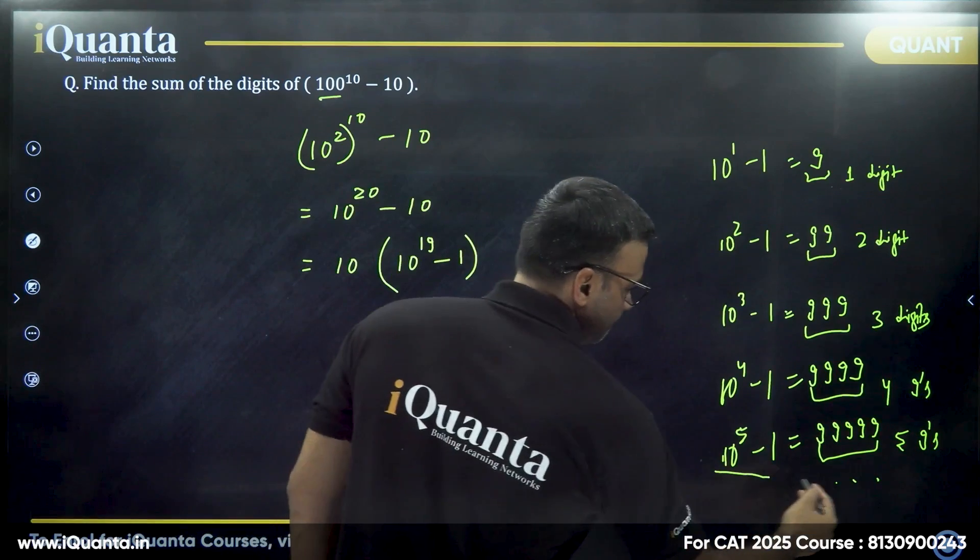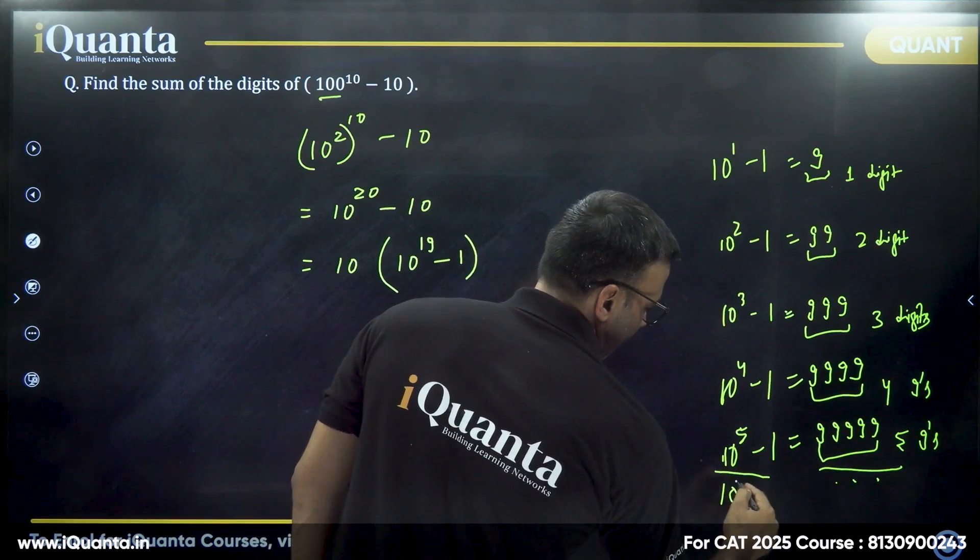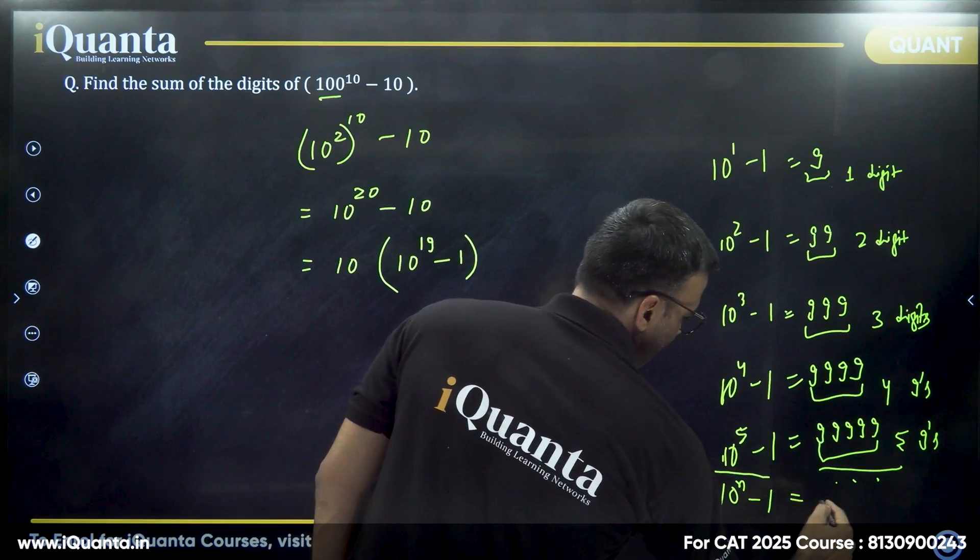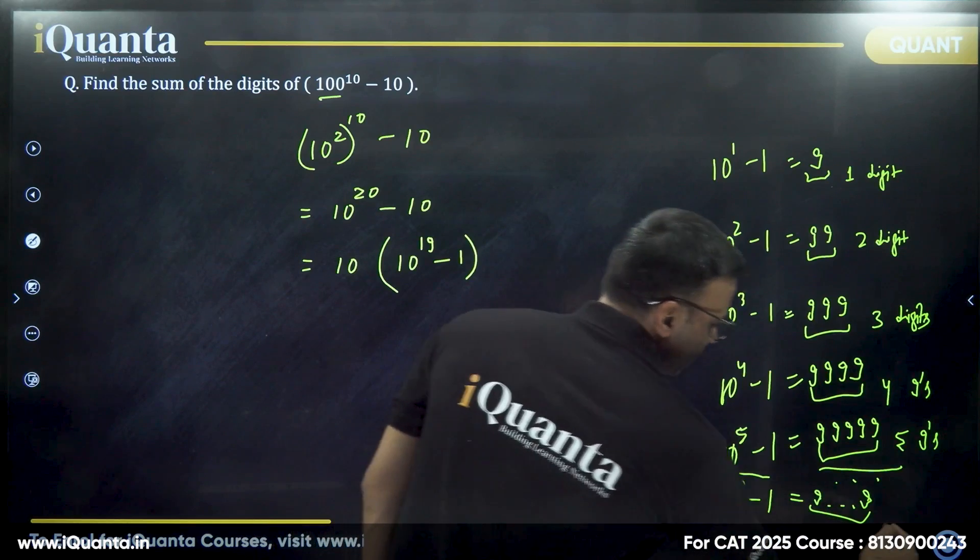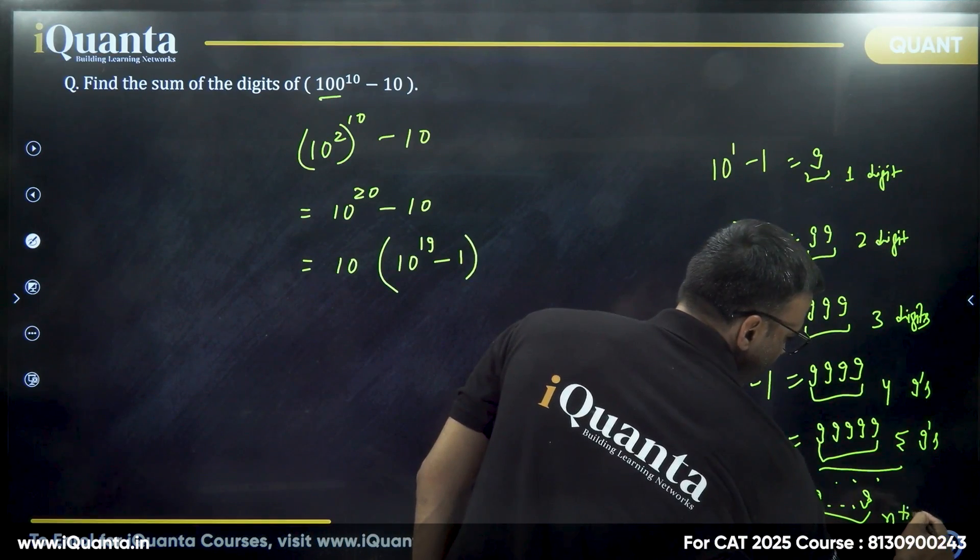Now following this pattern, you know, if it is 10 to the power n minus 1, it will be 999, n times 9. So n times 9.